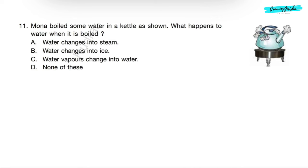Question 11: Mona boiled some water in a kettle as shown. What happens to water when it is boiled? When water is boiled to the temperature of 100 degree Celsius, it changes into steam or water vapors. And when water is cooled to the temperature of 0 degree Celsius, it changes into ice. So correct answer will be option A: Water changes into steam.